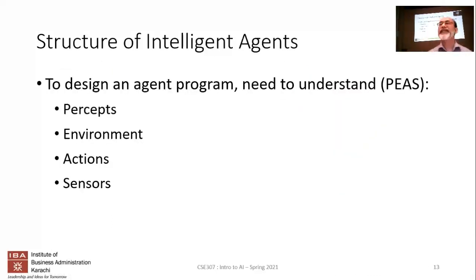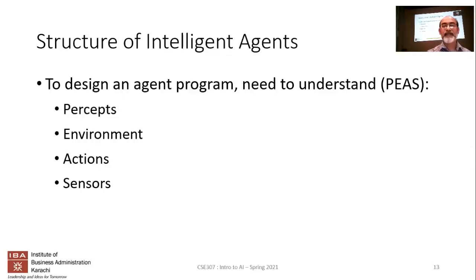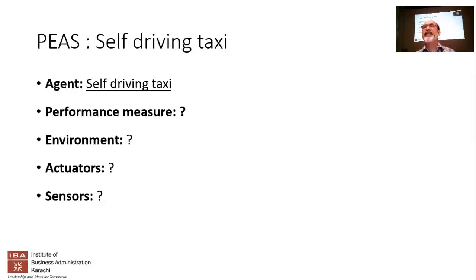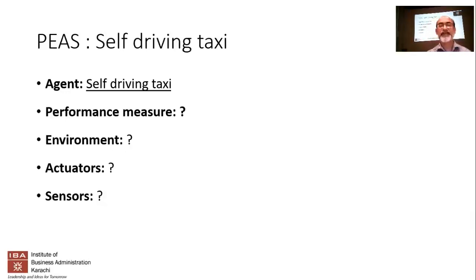When talking about an intelligent or rational agent, we refer to something called PEAS: P stands for performance measure, E is the environment, A is the actions you're going to take, and S is the sensors. It should perhaps be PESA since sensors come in first and actions come out later, but PEAS is easier to pronounce. So every time you design an agent, you have to figure out what those four components are. For the first question: what would be the performance measure if you're creating a self-driving car?